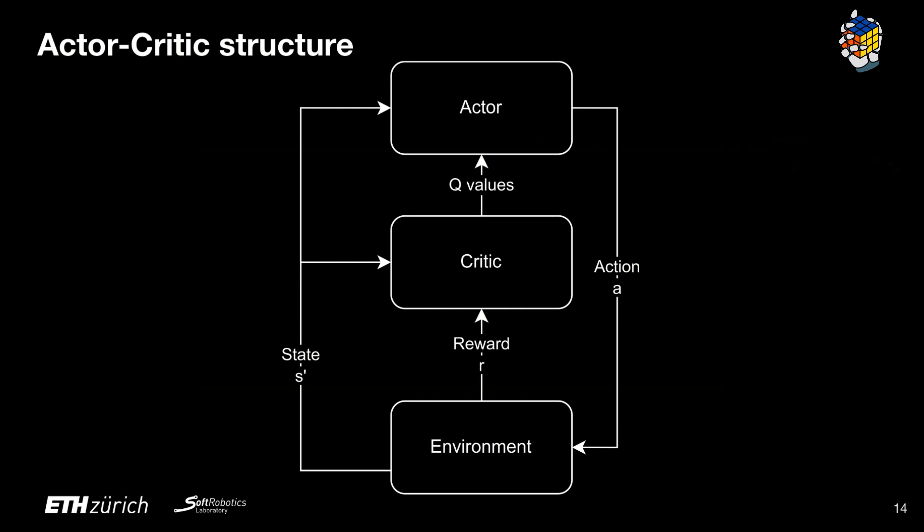To solve this problem we are going to introduce a more sophisticated architecture called the actor-critic. In this model we use two separate neural networks: one to learn the Q function as we did before, and another that learns the best action given state s. The network predicting the Q function is called the critic, while the one predicting the best action is called the actor.